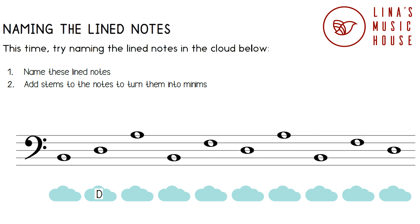The next note is on the fifth line. The fifth word in Good Birds Don't Fly Away is Away, so this is an A note. The next note is on the second line — Birds — so this is a B note. The next note is on the third line — Don't — so this is a D note.